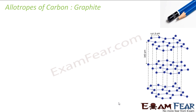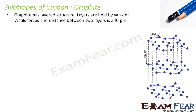Let us start with graphite first. Graphite is something we use in our day-to-day life — for example in pencils and also in batteries. Graphite has a layered structure. Layer 1, layer 2, layer 3 are held together by van der Waals forces. The distance between two layers is 340 picometers, and the carbon-carbon bond length within a layer is 141.5 picometers.